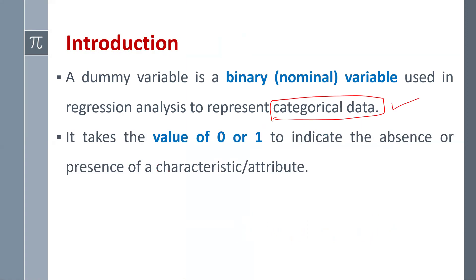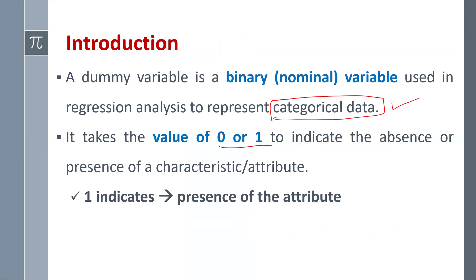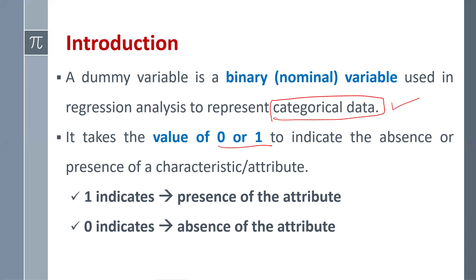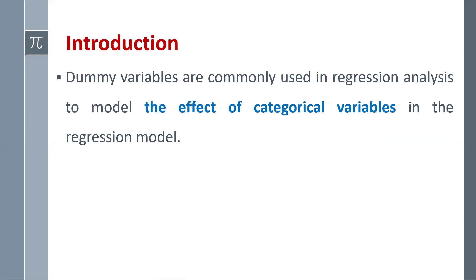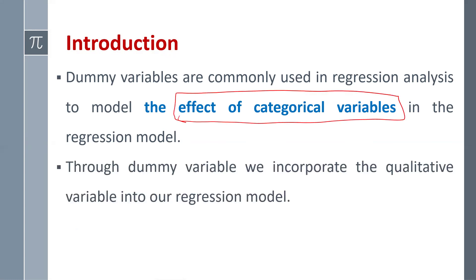It takes the value of 0 or 1. The value 1 indicates the presence of the attribute or characteristic, and 0 indicates the absence of the attribute or characteristic. Dummy variables are commonly used in regression analysis to model the effect of categorical variables, helping us incorporate qualitative variables as independent variables into the regression model.